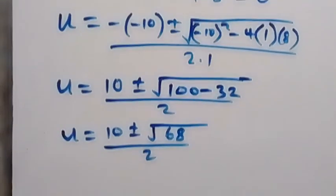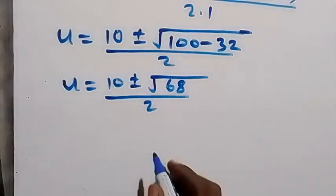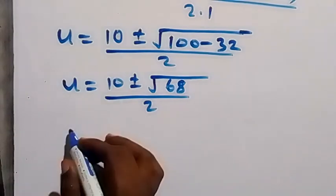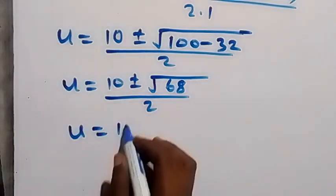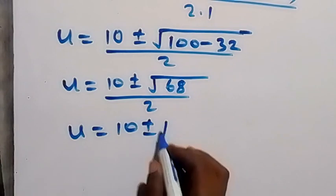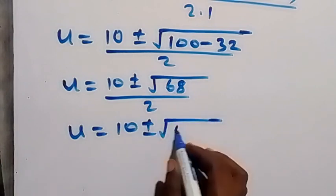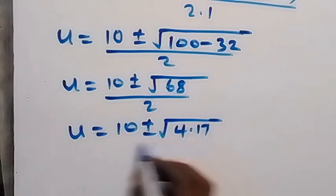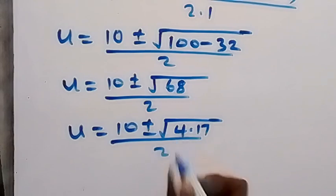And 68 can be separated as 4 times 17. So we have u equals to 10 plus or minus square root of 4 times 17 over 2. And square root of 4 here is 2, we bring that out.